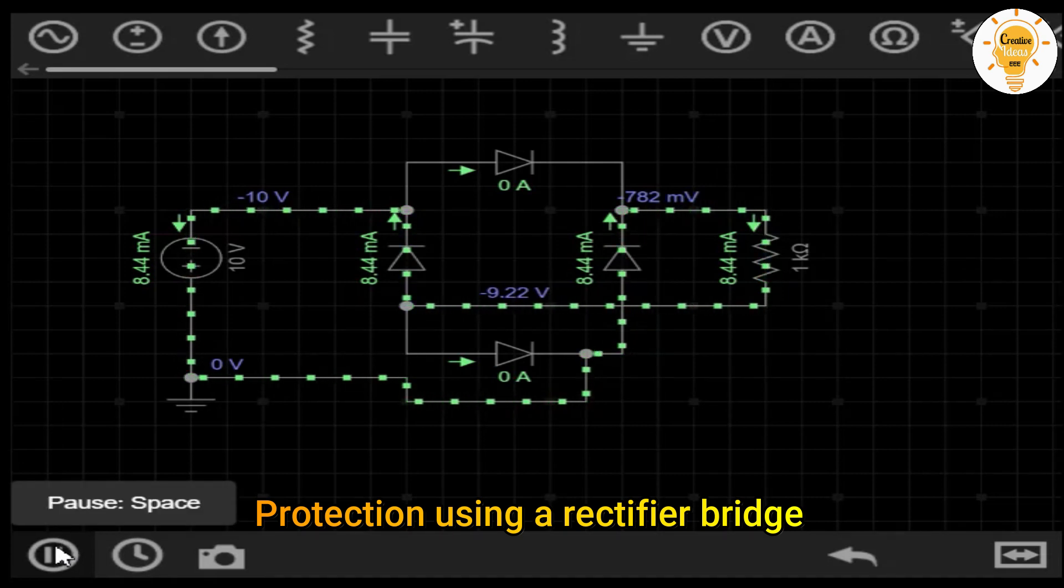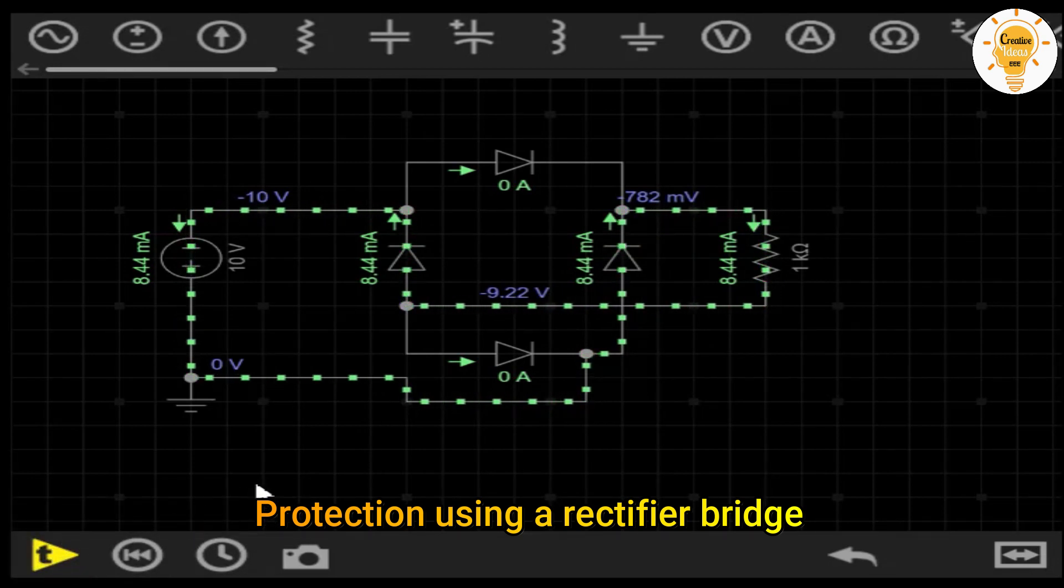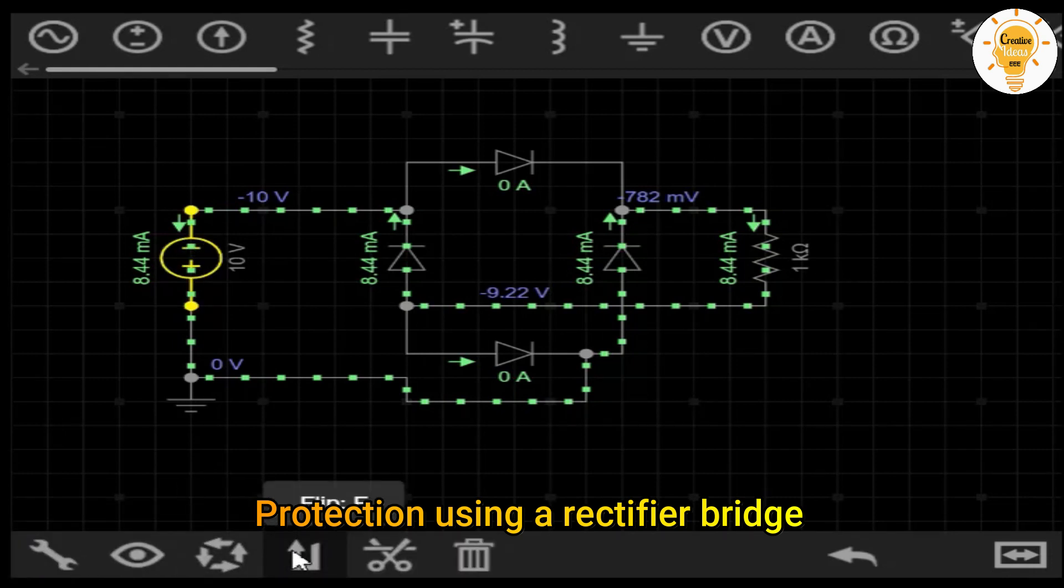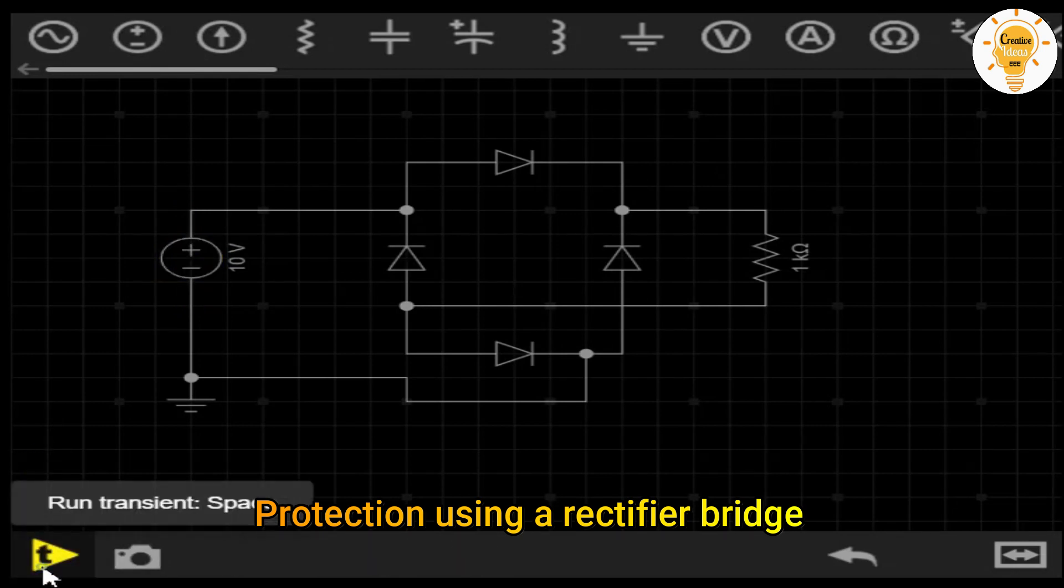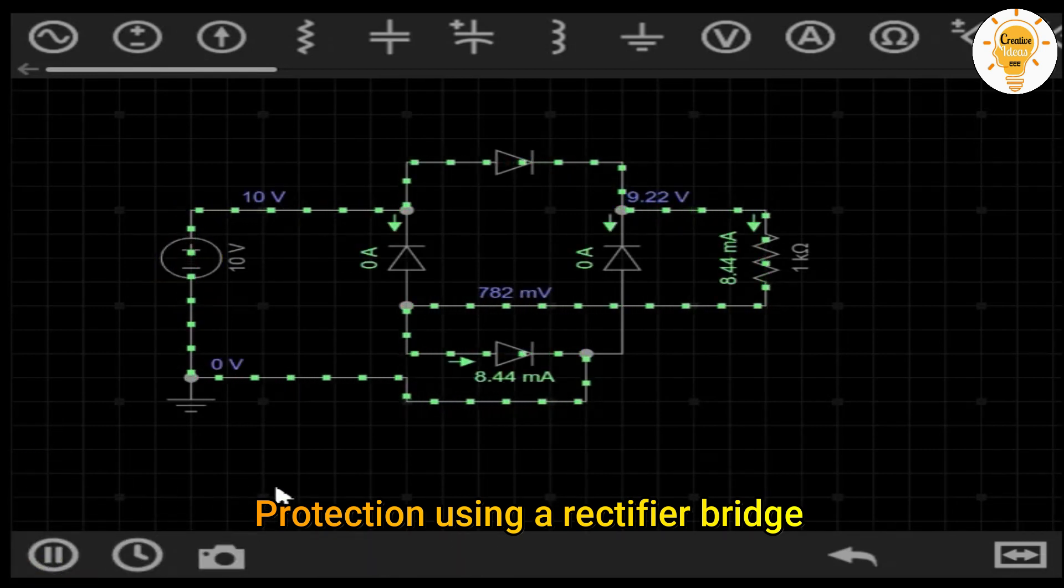As you can see, even though the source is reversed, the current also finds a correct path to our charge. This time, it will leave the positive pole and go through D2 which would be directly polarized. After going through the diode, it would reach the load and then it would go out to go through diode D1 and reach the negative pole of our source.